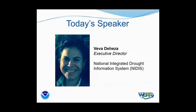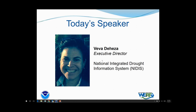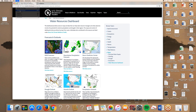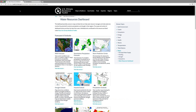Today's speaker is Viva De Heza. Viva is the executive director of the National Integrated Drought Information System, or NIDIS, and is responsible for the implementation of the public law that authorized NIDIS in 2006. She supports agency congressional, legislative, and policy priorities to achieve the NIDIS mission goals and objectives. She serves as the NIDIS liaison for the Western Governors Association and the Western State Water Council, and oversees staff that coordinates all NIDIS regional drought early warning systems around the country.